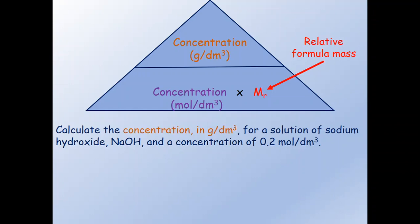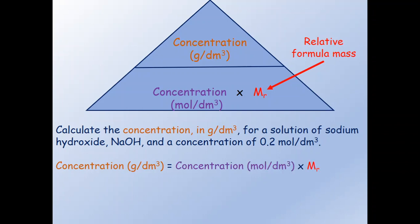Here we have to calculate the concentration in gram per decimeter cube, so we start by writing: concentration in gram per decimeter cube equals. We cover up concentration in gram per decimeter cube in our triangle at the top so that we know which calculation to carry out, and we are left with concentration in mole per decimeter cube times Mr.